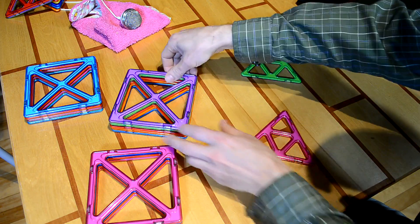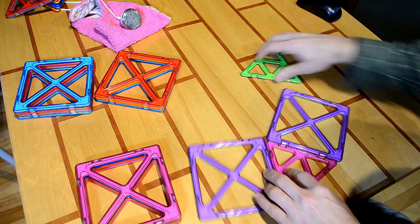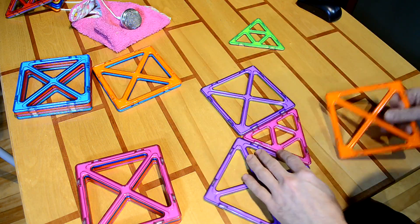These toys are called Magformers and you can use them to form all kinds of interesting shapes. They stick together along the edges just using magnets.